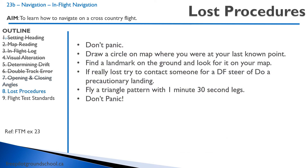Let's talk about lost procedures. First off, don't panic — just settle down, you're going to find your way. Draw a circle on your map where you were at your last known point — this is why it's a good idea to do those pinpoints or breadcrumbs as you fly. You know what time you were there and how fast you fly, so you can estimate where you are. Then fly to a prominent landmark on the ground, look for it on the map, and it should be somewhere within that circle around your last known point.